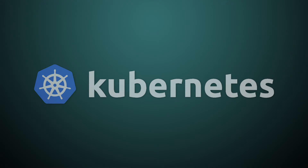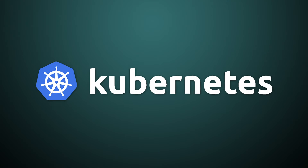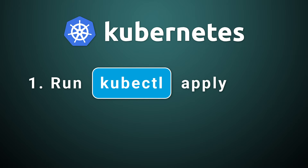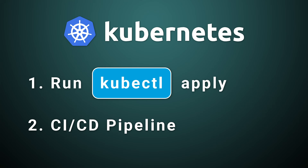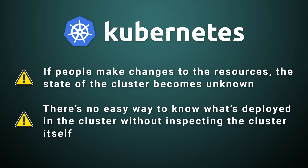First, let's talk about GitOps and the problems that it's trying to solve. When first getting started with Kubernetes, you probably deployed your resources in one of two ways: either you ran kubectl apply from your computer, or you ran it within a CI/CD pipeline with each code change. There are a couple of issues. First, it happens only once and over time people may make changes to those resources, so you're not sure what the actual state of things are in the cluster. This leads to the second point that there's no easy way to know what's deployed in the cluster without inspecting the cluster itself.